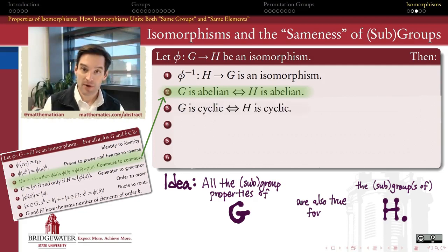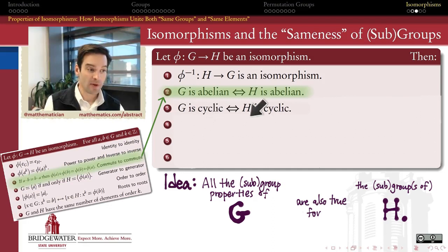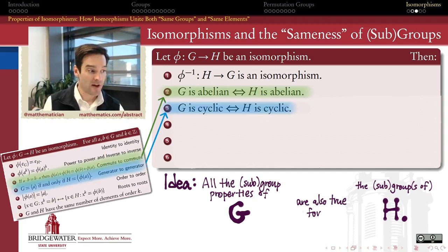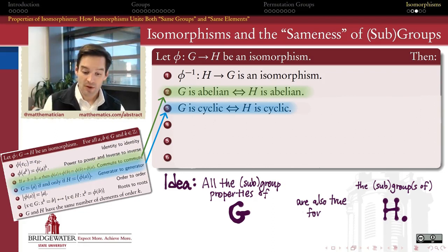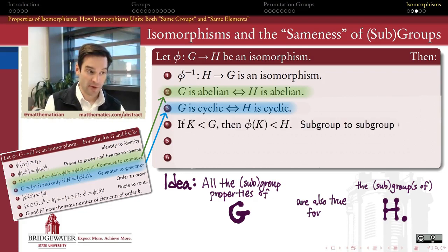Isomorphism also preserves the cyclic property of groups. G is cyclic if and only if H is cyclic, when G and H are isomorphic. That, too, follows directly from one of the element properties from the previous video: if G is generated by A, that's true if and only if H is generated by the image of A. So isomorphisms also associate cyclic groups one to another.